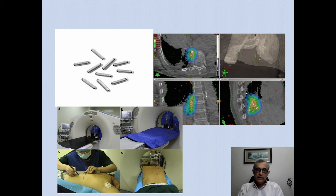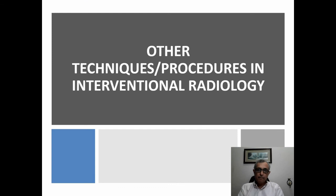Another minimally invasive way of treating tumors is iodine seed brachytherapy — very fine pellets of radiation on silver wires implanted into areas of tumor under CT guidance. This is increasingly seen as an option for patients who don't respond to conventional chemotherapy or radiotherapy, or who are not amenable to any kind of ablative therapy.